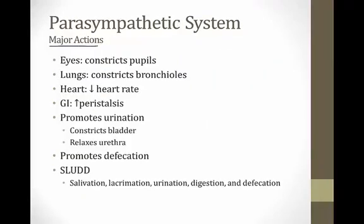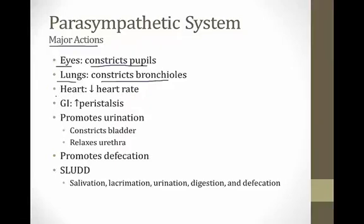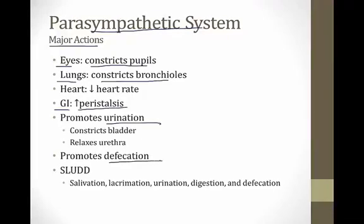The parasympathetic system — rest and digest — has actions largely opposite to the sympathetic system. It constricts the pupils, constricts the bronchioles, and chronically decreases heart rate; cutting parasympathetic innervation to the heart will raise the heart rate because it is constantly suppressing it. In the GI tract, it promotes peristalsis, and it also promotes urination and defecation — constricting the bladder and relaxing the urethra.